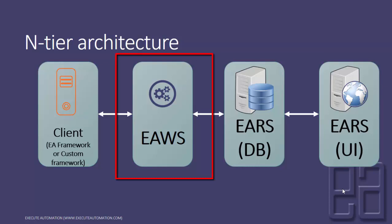The WCF web service acts as a contract between your actual implementation and the caller, or the client. Now if there is any change, the whole change happens in the web service itself. Your code or client will be notified instantly that there is a change in the implementation. With the existing three-tier architecture, any change happening in the Exit Automation reporting system or its database will not be automatically notified to the client.